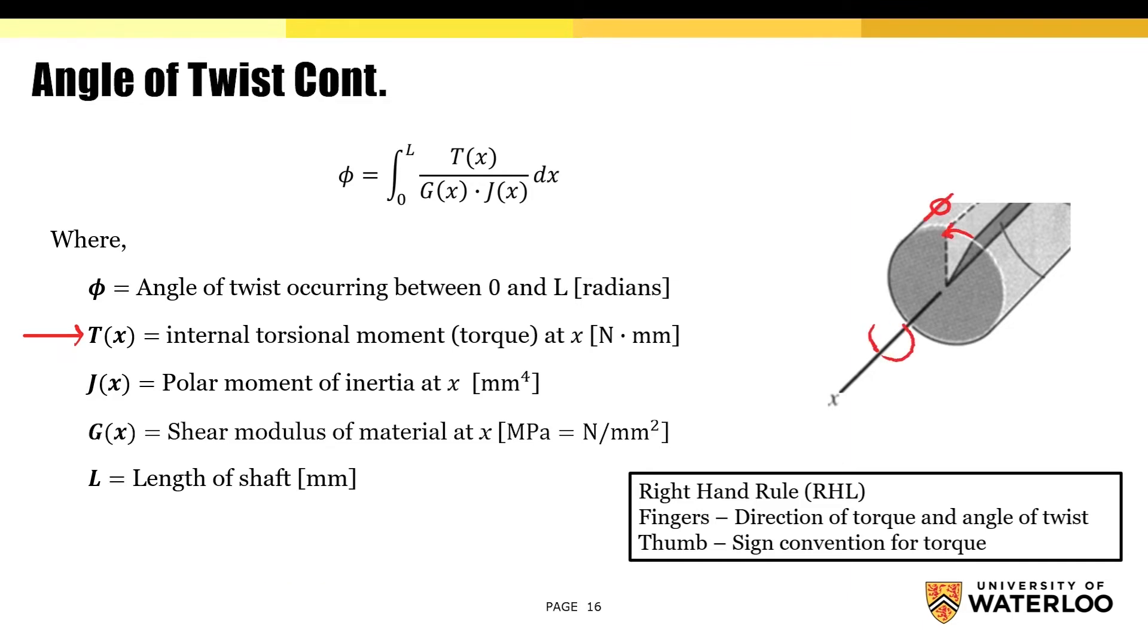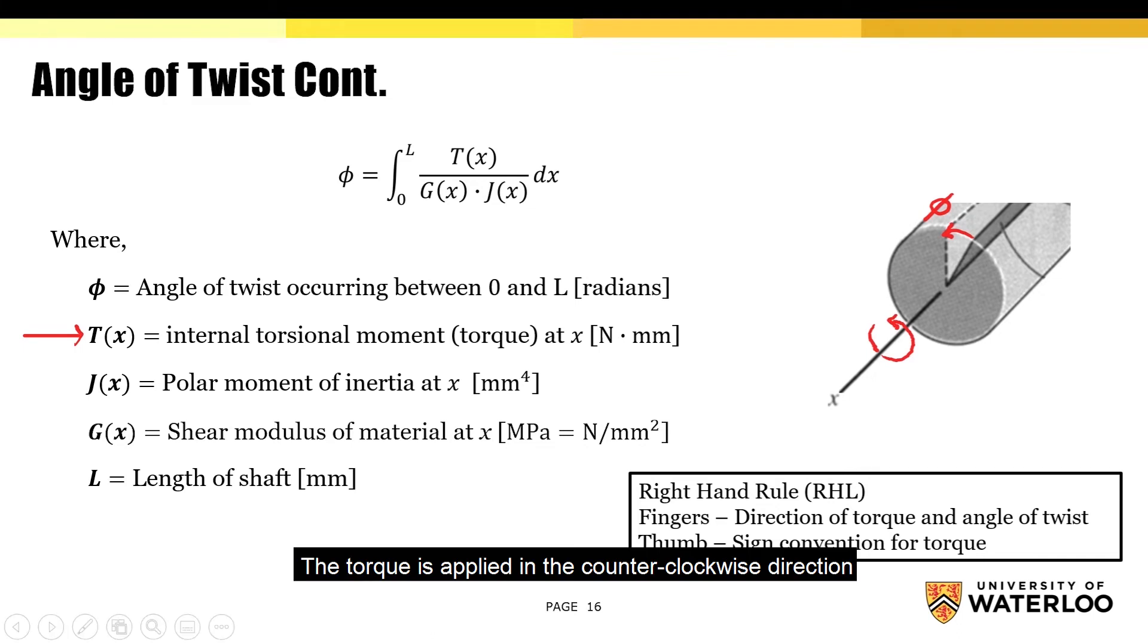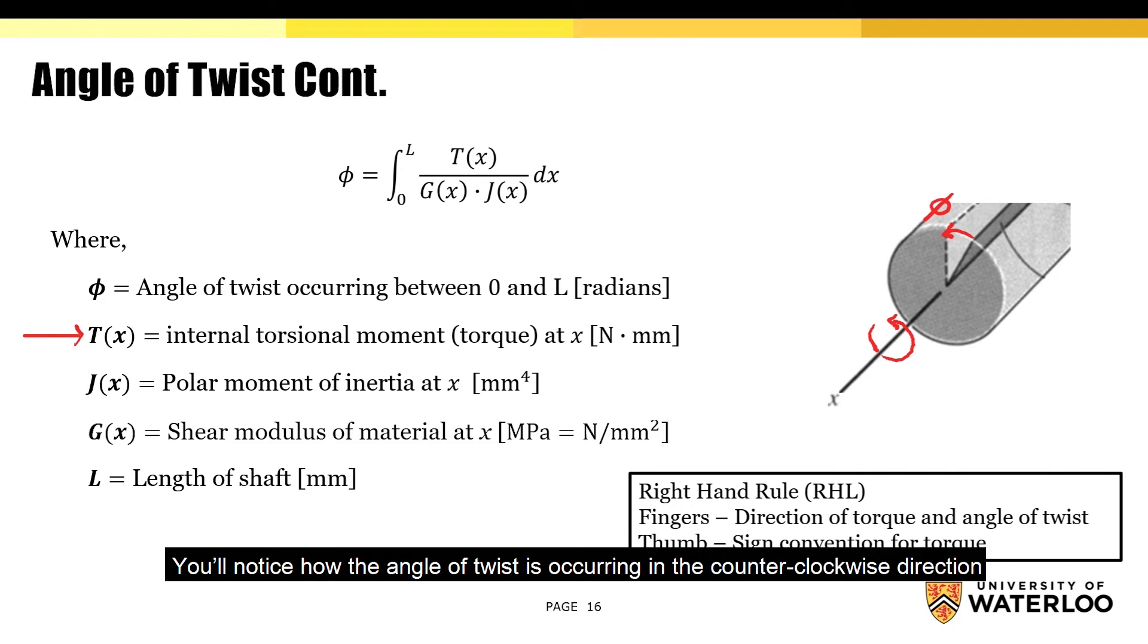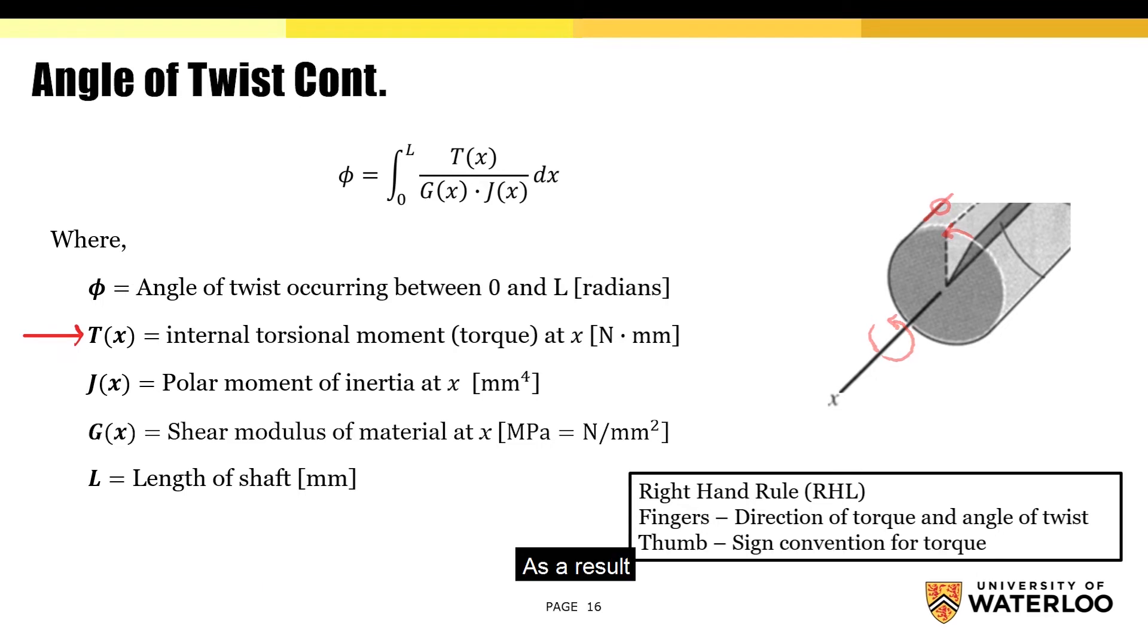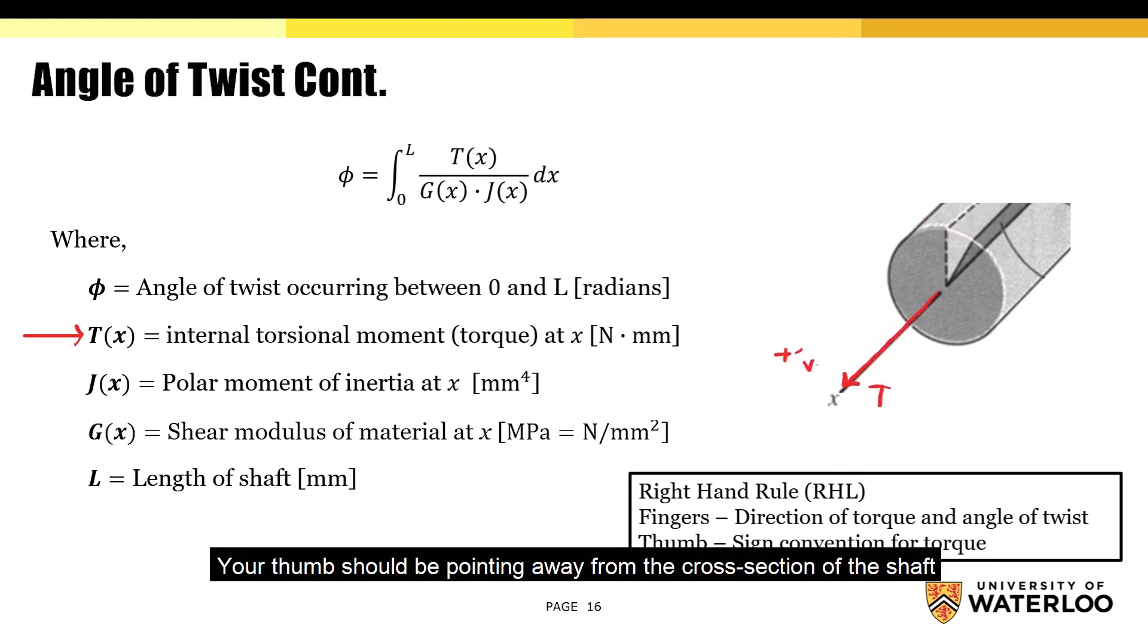For this scenario, the torque is applied in the counterclockwise direction. If you curl your fingers along the same direction, you'll notice how the angle of twist is occurring in the counterclockwise direction. As a result, your thumb should be pointing away from the cross-section of the shaft. We'll be using this as our positive sign convention.